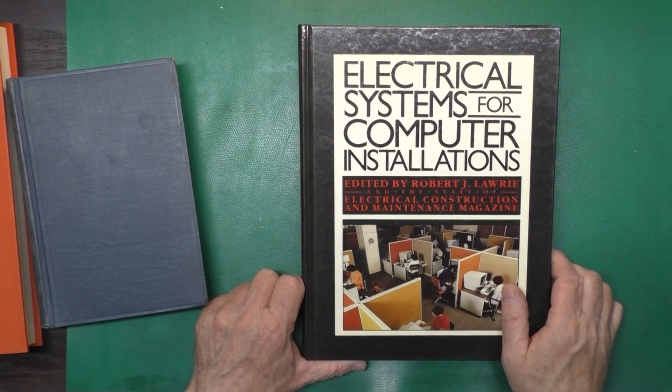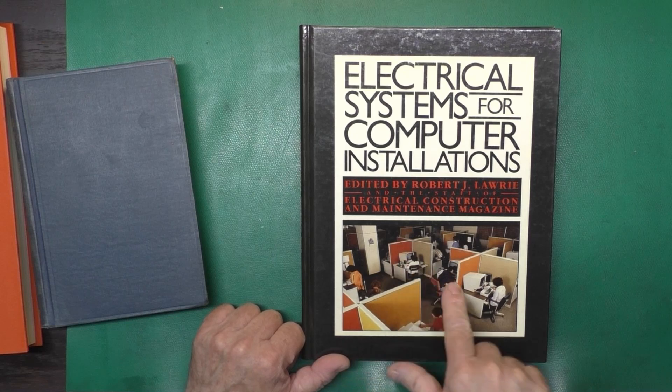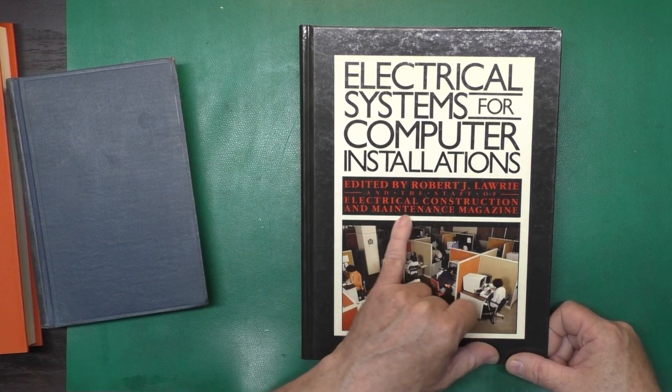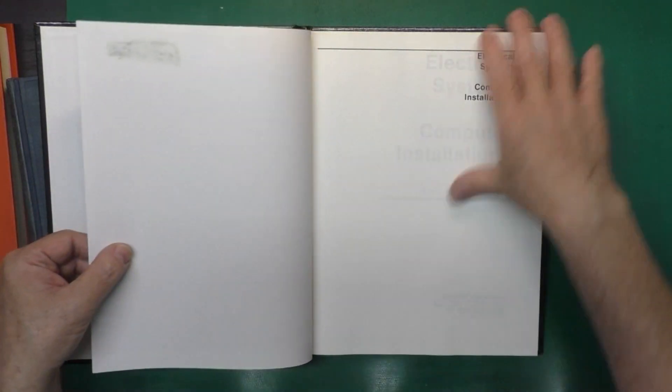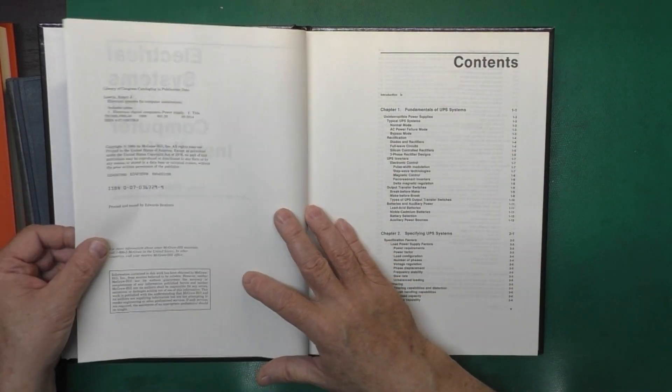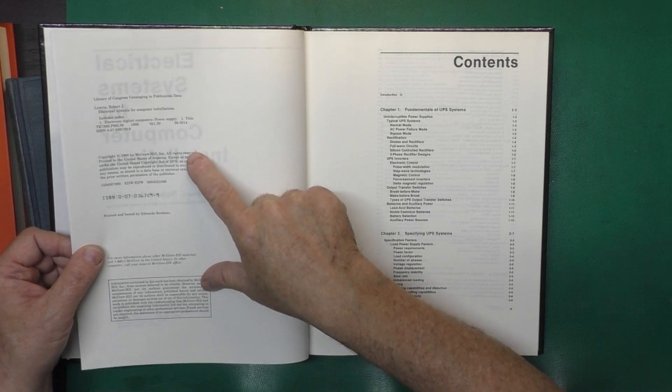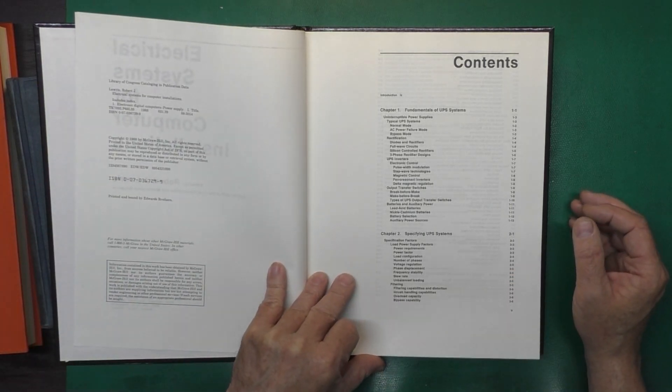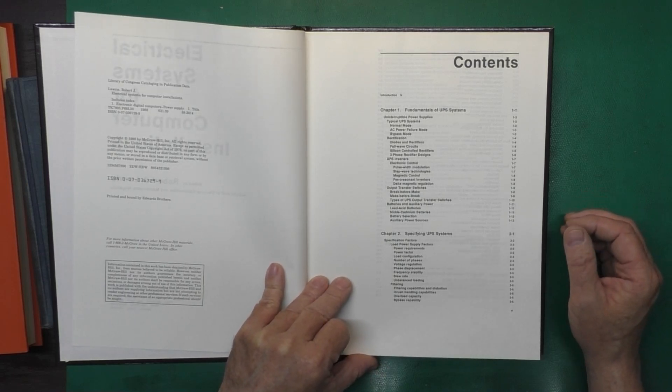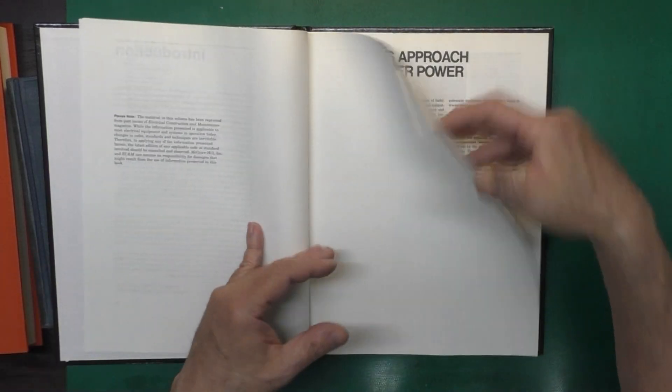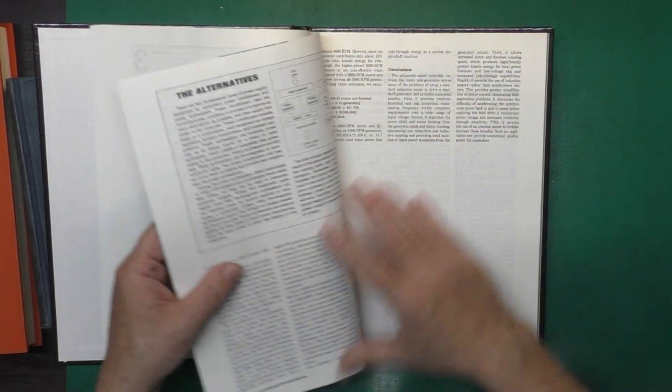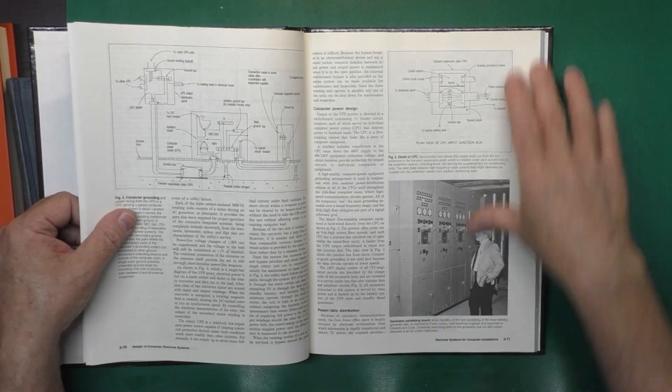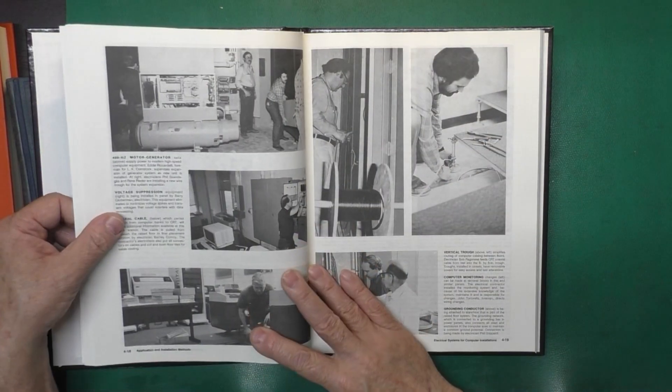Now, this book is less practical, but I thought it was interesting. I mean, just look at all these cool computers on the cover. Electrical Systems for Computer Installations, edited by Robert J. Lawry, and the staff of the Electrical Construction and Maintenance Magazine. And when was this one? Copyrighted. Copyright 1988. So this is relatively new. This would have been published after I just got out of high school. So the fundamentals of UPS systems, power supplies, distribution of power to big computer rooms, this type of thing. It's just like industrial scale computer rooms with big racks of computers and things like that. So again, not practical for anything I need. I just thought it was interesting.